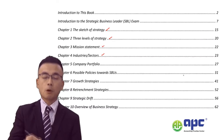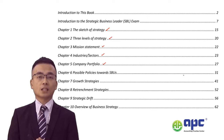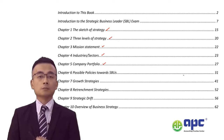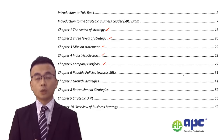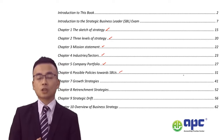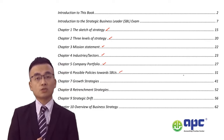We'll then be detailing the corporate strategy by first looking at the company portfolio — whether or not we should acquire another business in the same sector or enter a new industry. We'll have different criteria to assess which approach is good. That leads us to chapter six, covering possible policies towards strategic business units, or SBUs.